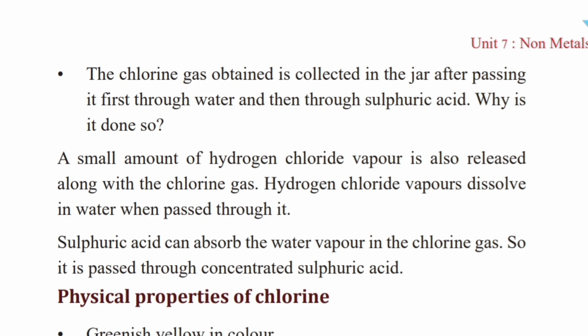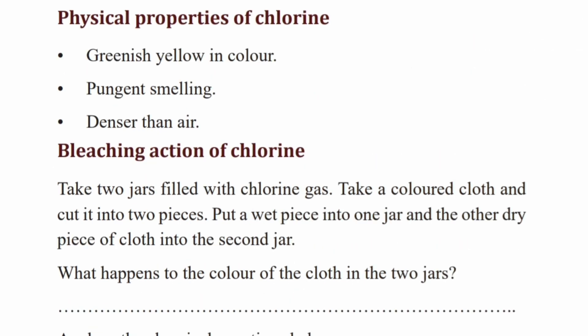Sulfuric acid absorbs the water vapor in chlorine gas. Chlorine has a bleaching property. If you use it on a colored dress, the color will fade — this is the bleaching property.